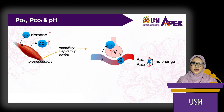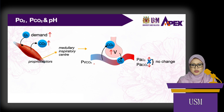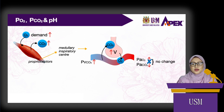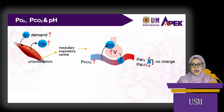In venous blood, the increased carbon dioxide produced from tissue metabolism increases the venous pressure of carbon dioxide. The excess carbon dioxide is cleared by the increased ventilation rate, so the excess carbon dioxide never reaches the systemic arterial blood.